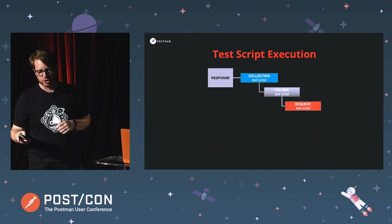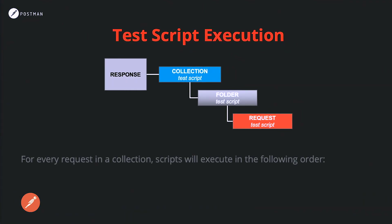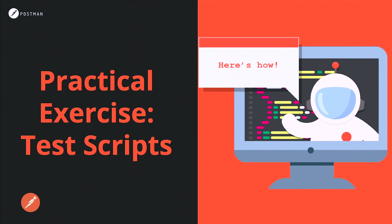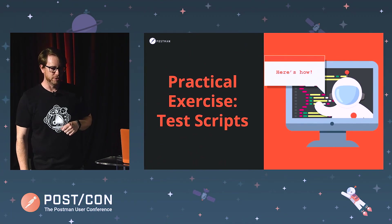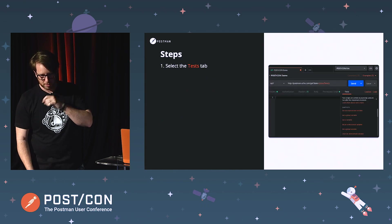As far as the test script execution goes, you can see the flow in the diagram here. Similar to what we saw in the pre-request execution, once a response is received, we execute any collection-level tests followed by folder-level and lastly the request-level tests. So we will do yet another practical hands-on exercise — this time around, test scripts.